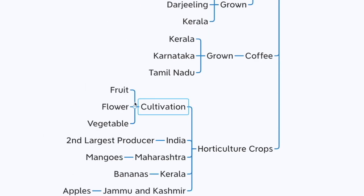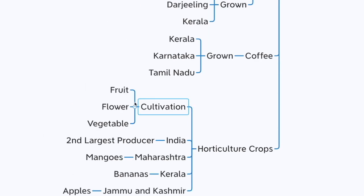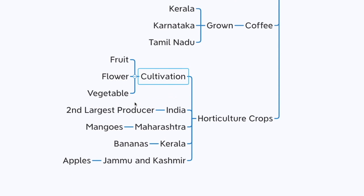Finally, let's look at horticulture crops. The cultivation of fruits, flowering plants, and vegetables is called horticulture. India is the second largest producer of horticulture crops. Mangoes from Maharashtra, bananas from Kerala, and apples from Jammu and Kashmir are famous throughout the world. That's it for today — see you next time with part two. Take care, thank you very much!